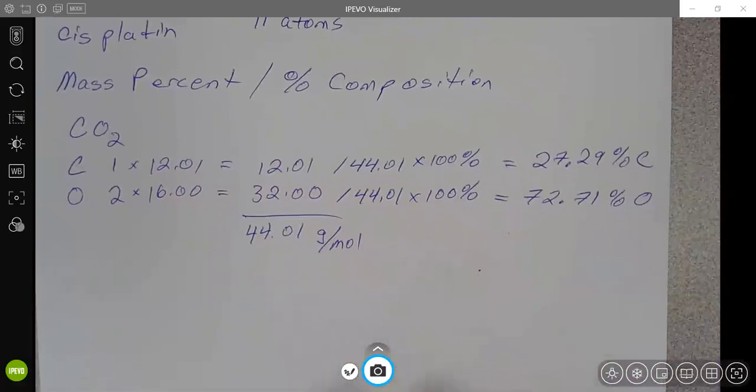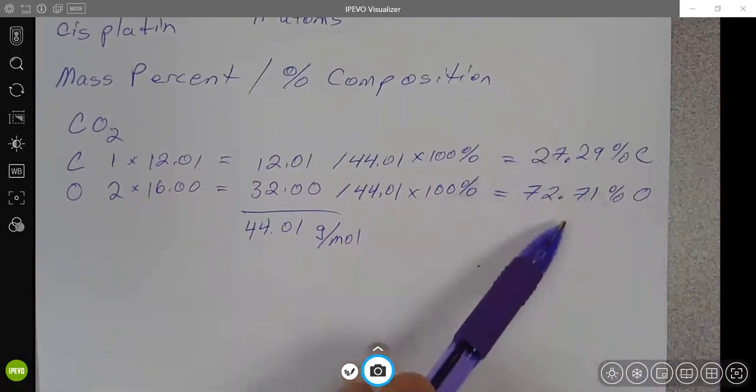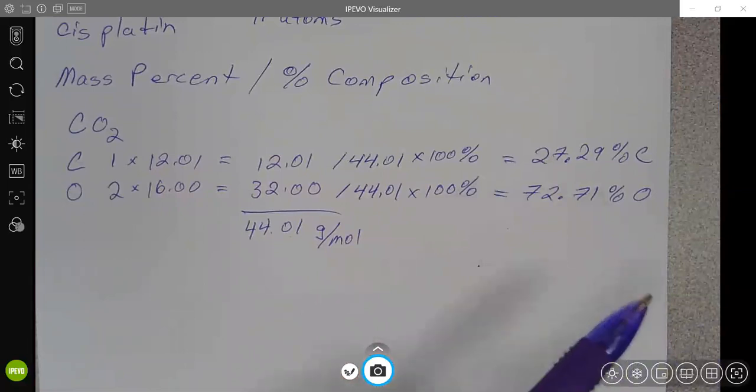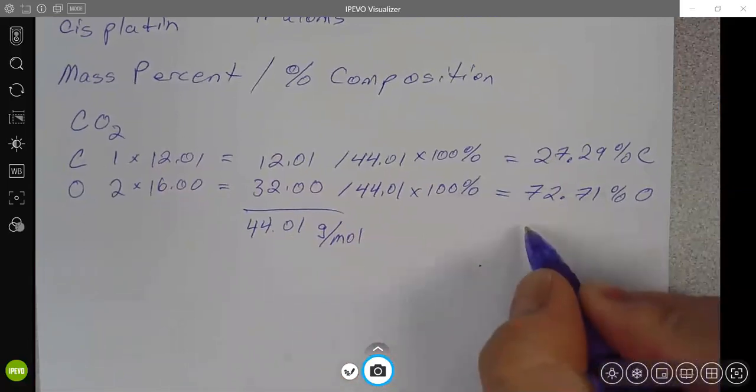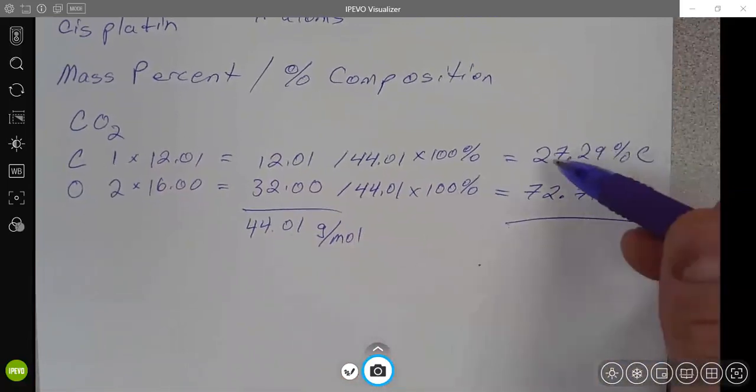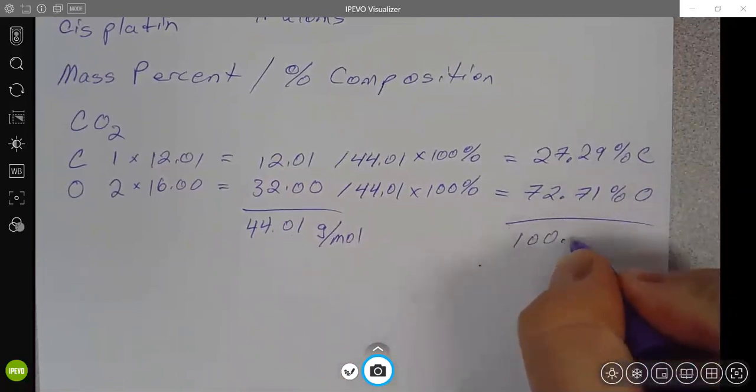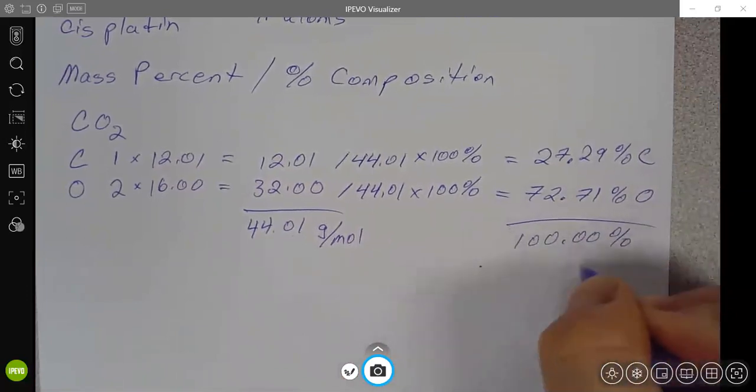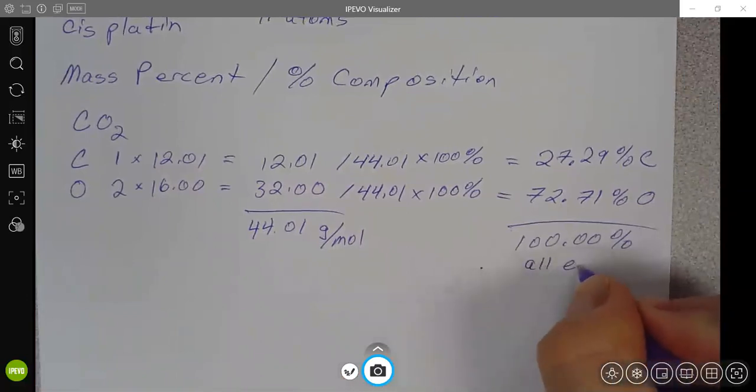Either one of these individually would be the individual mass percent of that element. So the percent composition is always going to be the percents of all of the elements in the compound. And the other way you can check your work here, if you'll notice, is that when you add these two numbers up, you should get pretty close to 100 percent because that would be all elements in the compound.